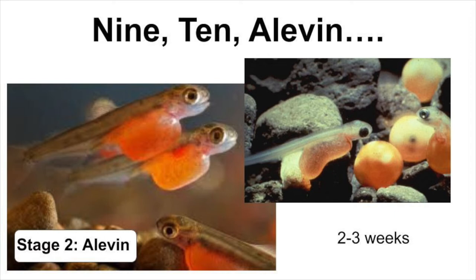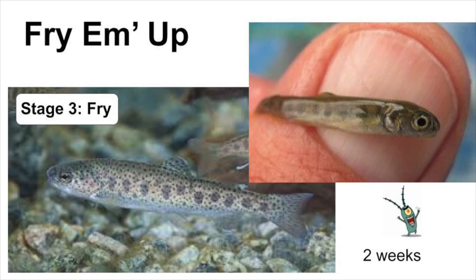Once hatched, the trout have a large yolk sac used as a food source, so they don't need to be fed. During this stage, they are called alevin. Each alevin slowly begins to develop adult trout characteristics. In order to avoid predators, they stick close to the gravel until it buttons up or eats all of its yolk sac. This stage usually lasts between two and three weeks.